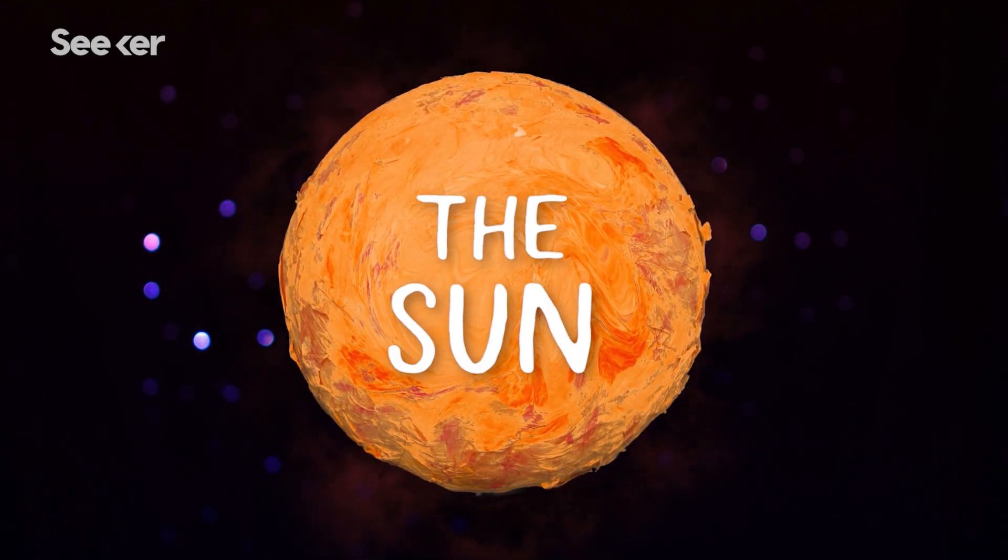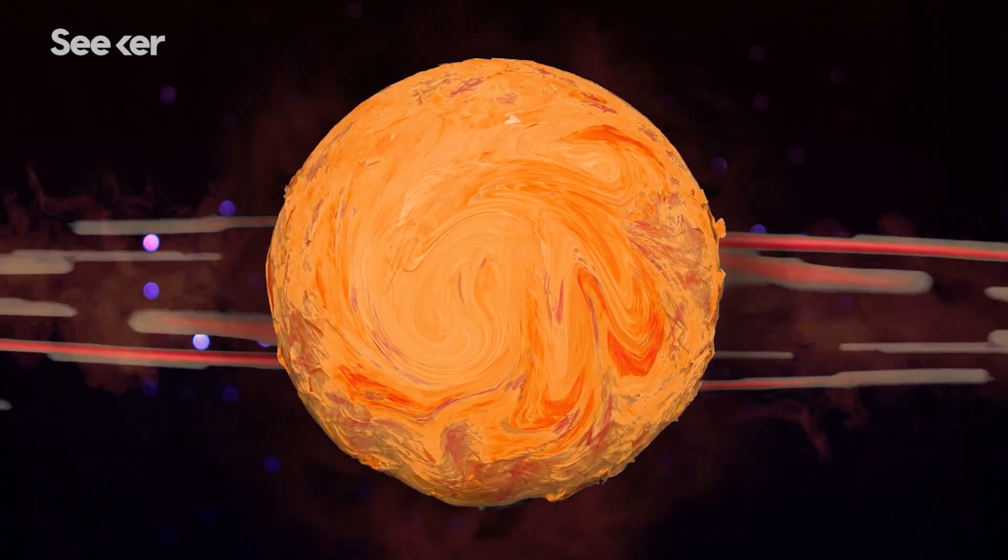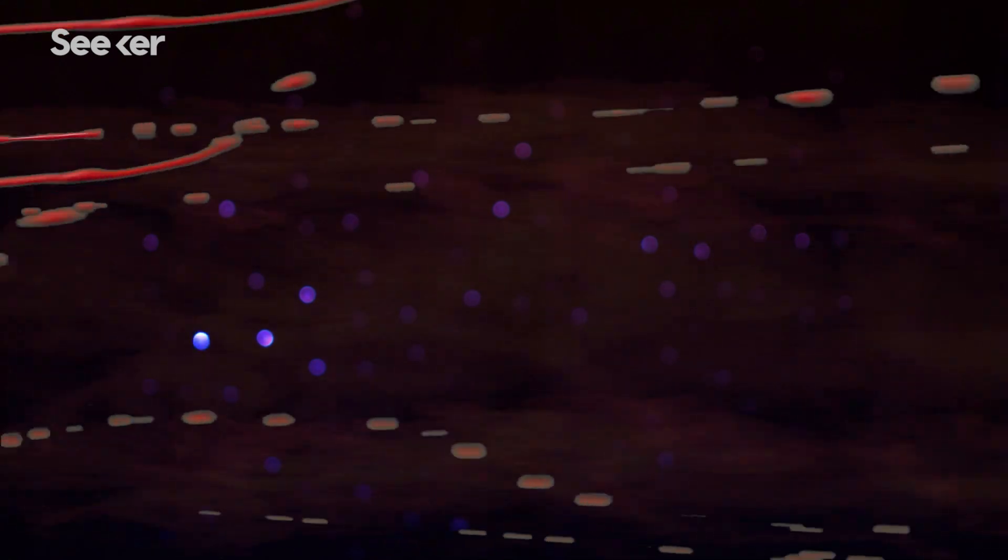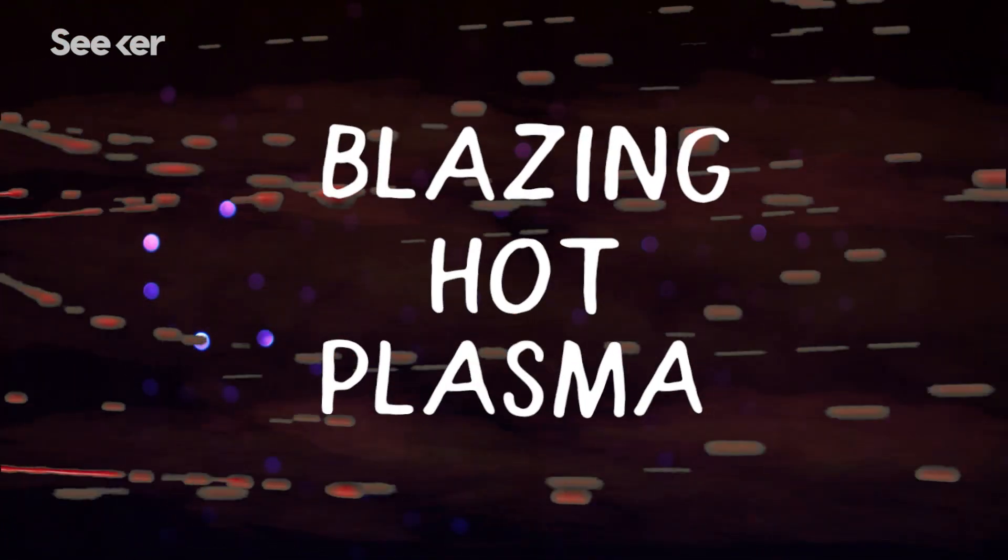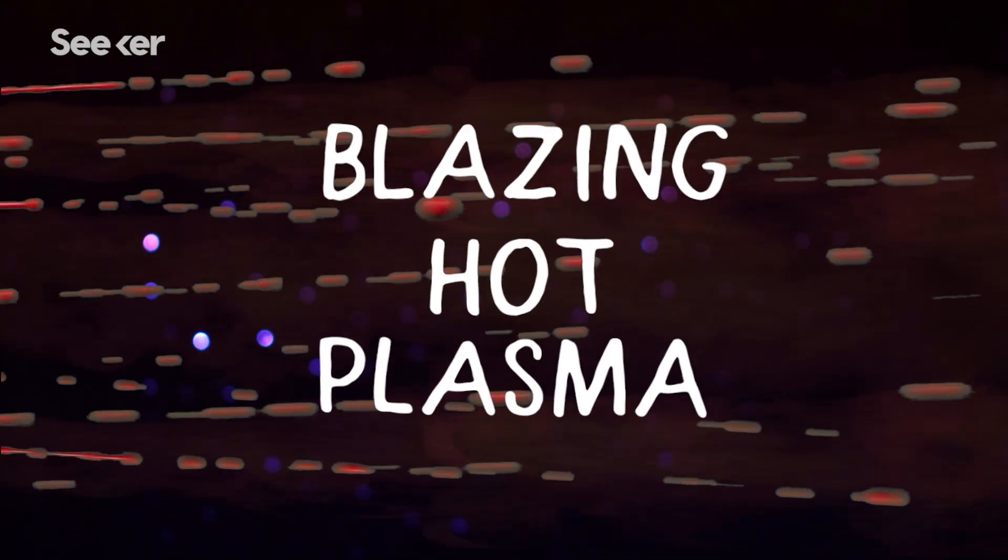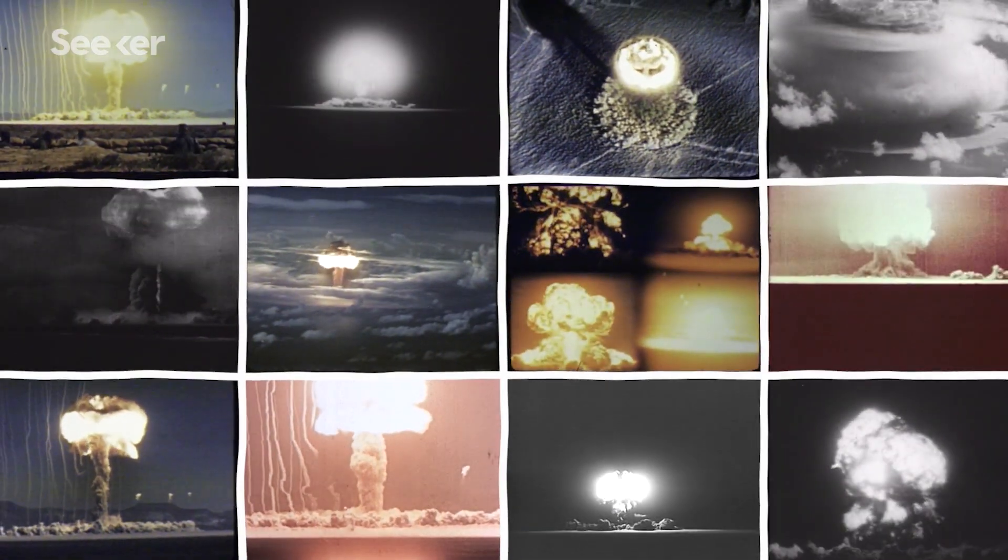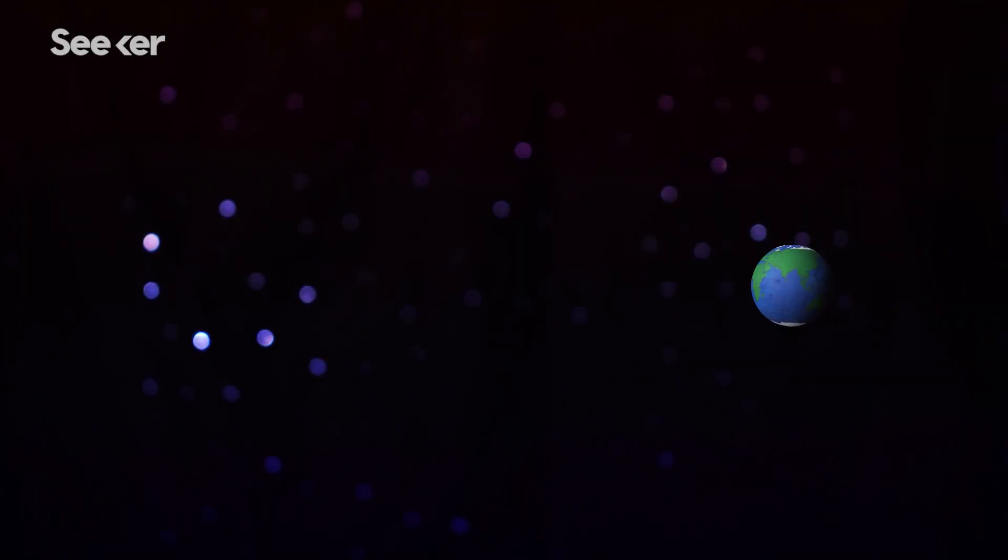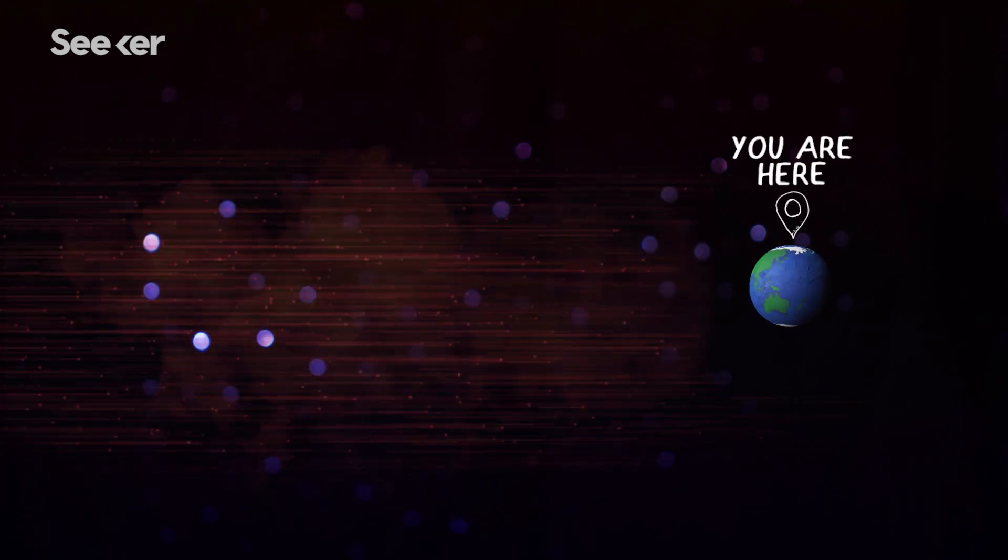Every now and then, the sun explodes. Without warning, blazing hot plasma spews into the solar system with the force of about 20 million nuclear bombs. Depending on the direction of the explosion, that plasma could head straight for Earth.